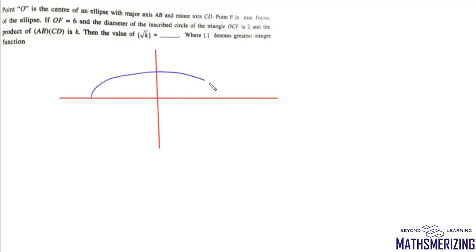The next question: point O is the center of an ellipse with major axis AB and minor axis CD. Point F is one focus of the ellipse. OF is given as 6, so we draw the ellipse with center at the origin and focus F. This means ae = 6, so a = 6... wait, ae = 6 so c = 6.